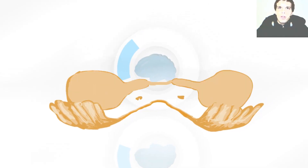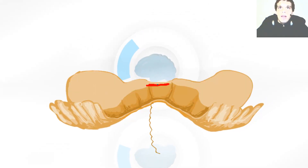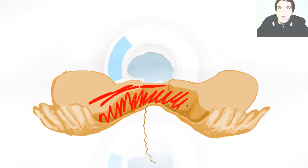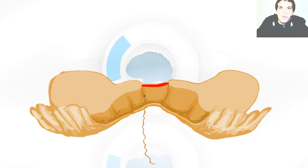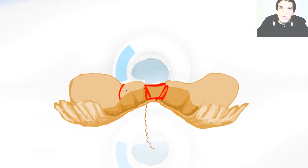Then we have the cerebellar pedunculi, the vellum, and the pedunculi. They create the borders of the fourth ventricle. The fourth ventricle is the space over here — it's more like a bag and it's filled with cerebrospinal fluid. The vellum creates the roof of this fourth ventricle. The superior pedunculi also create the roof here, but as we go further and closer to the medulla oblongata, it goes more lateral so it creates the upper lateral border of the fourth ventricle.